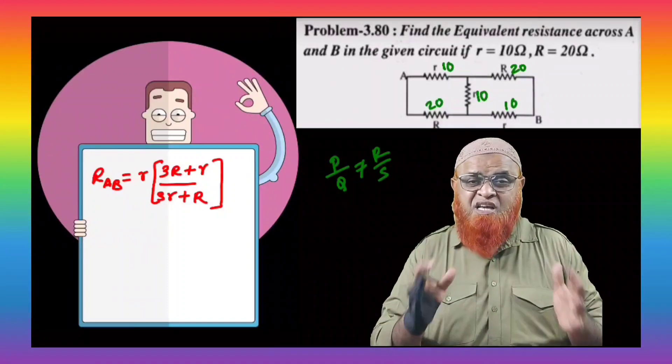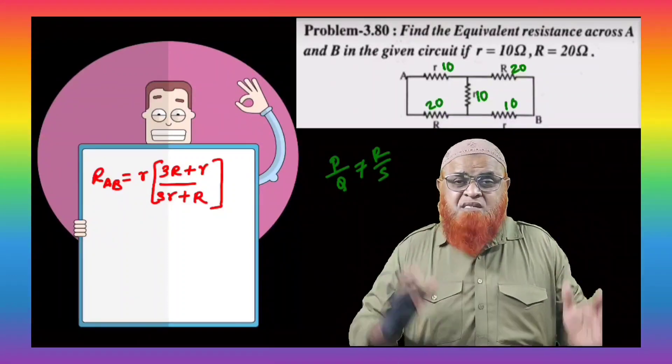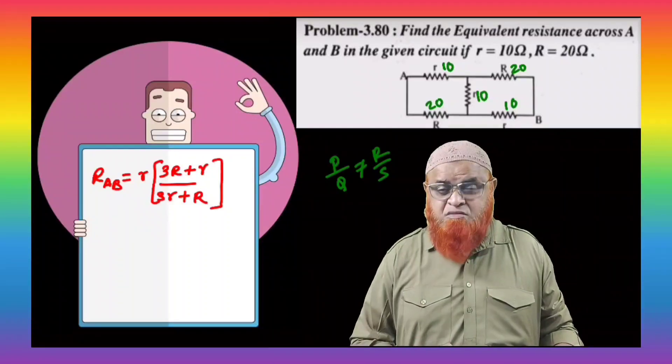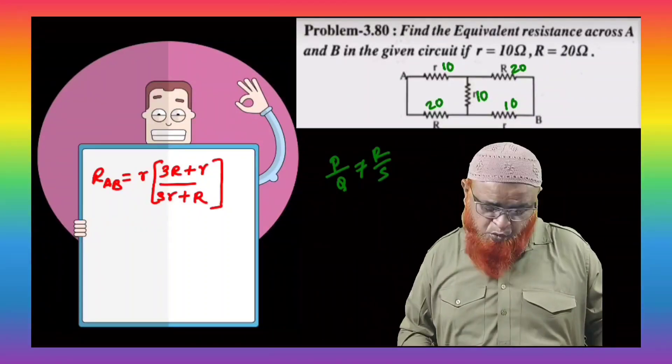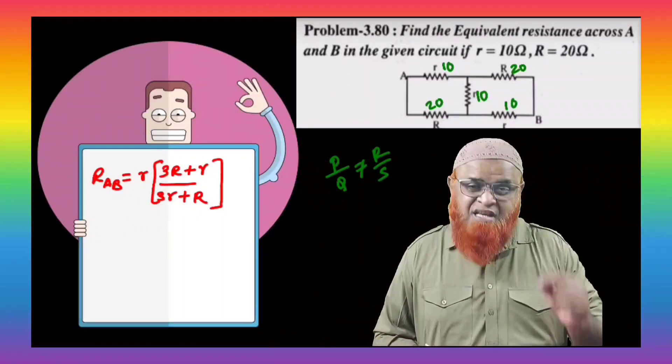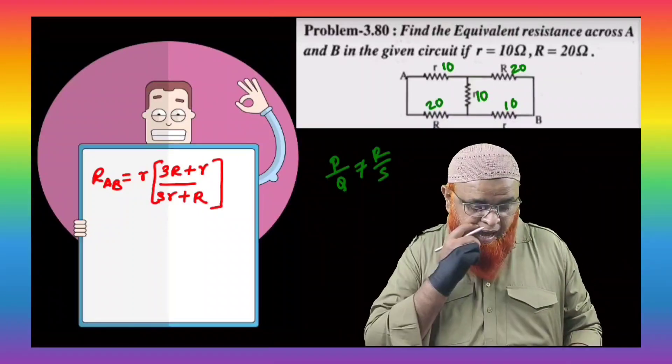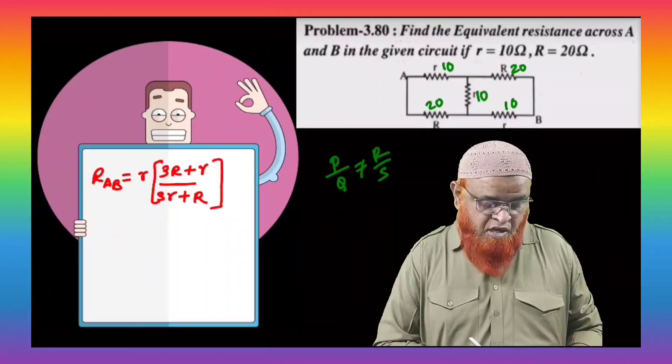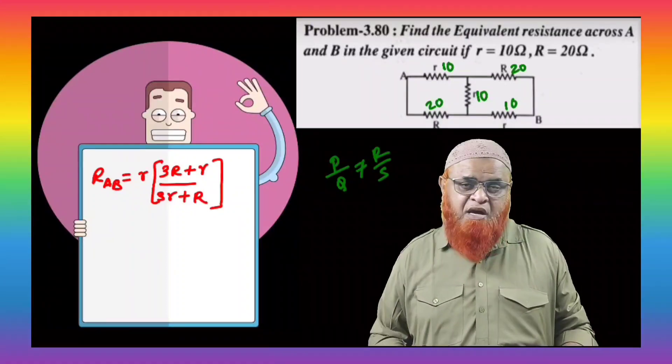Because you can solve this problem by using Kirchhoff's laws also. But it is time-based. This is the time where we have to do smart work here. Because hard work everyone will do. So what is the smart work here is, you have to use this shortcut formula. That is, RAB is equal to small r into 3 into capital R plus small r by 3 into small r plus capital R.